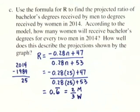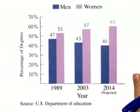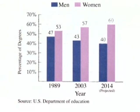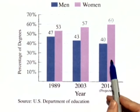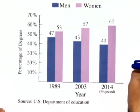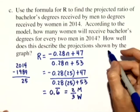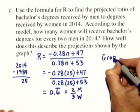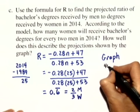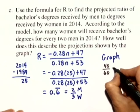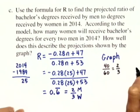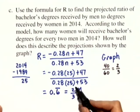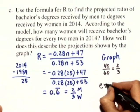How well does this describe the projections shown by the graph? Looking at the graph, in the year 2014, the bar graph shows that 40% of men received a bachelor's degree and 60% of women received a bachelor's degree. The graph shows 40% men for every 60% women, which reduces to 4/6, which is the same as 2/3. We got 2/3 from our ratio formula and 2/3 from our graph — so it's exactly the same.